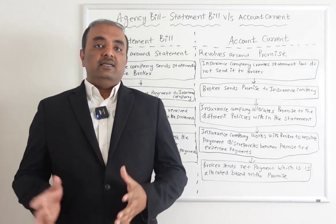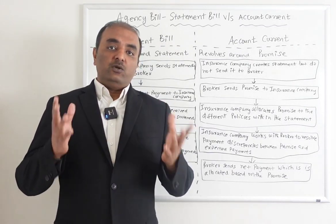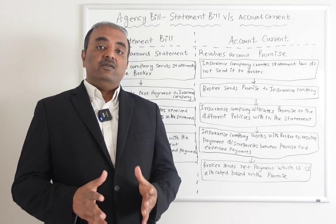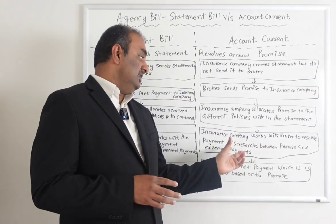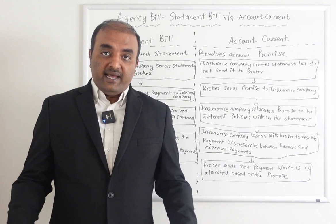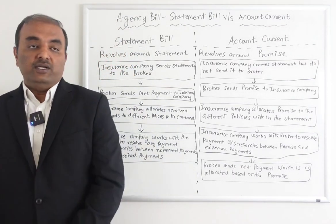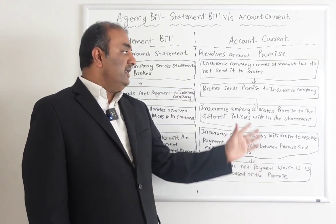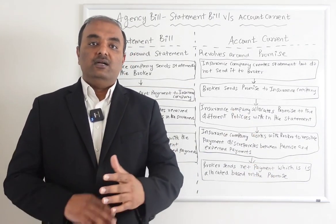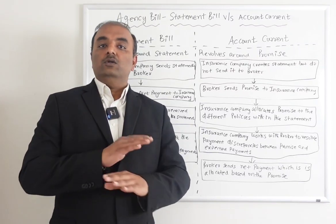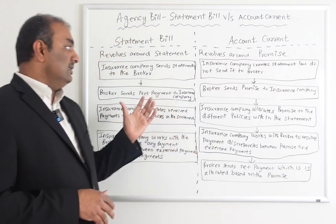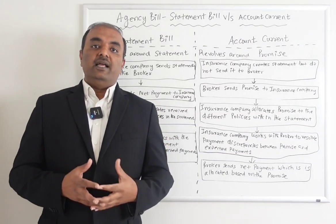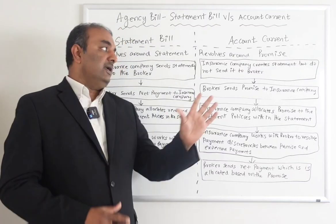After applying the promise, if the insurance company is expecting $25,000 but the promise says only $21,000, that $4,000 discrepancy is worked upon between the insurance company and the broker at this step. Once that discrepancy is resolved, after a week or so when they receive the actual payment, they apply it based on the promise. The benefit here is that before applying the payment, you are resolving all discrepancies first. Whereas in statement bill, you receive the actual payment, apply it, and then see and address the discrepancies afterward.